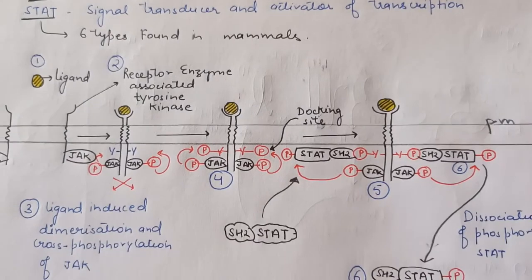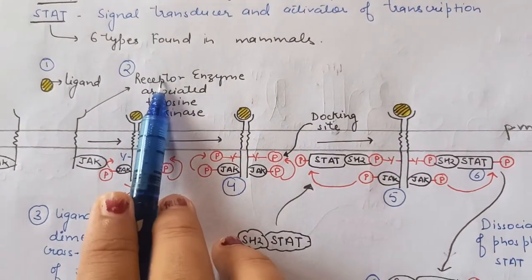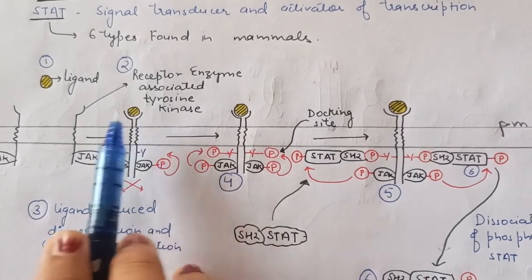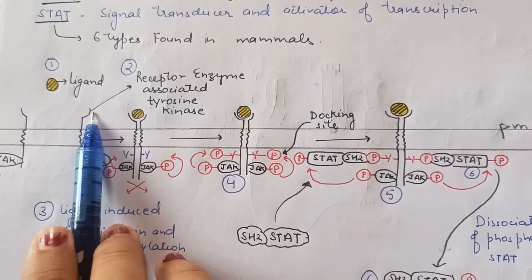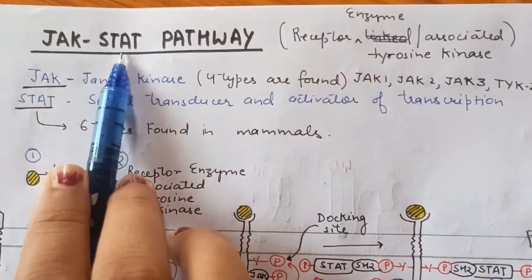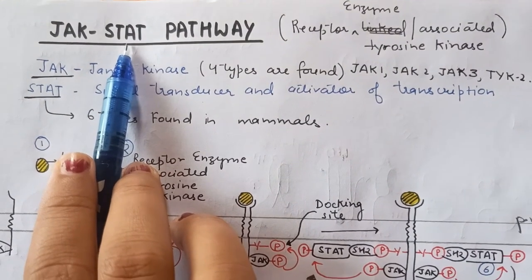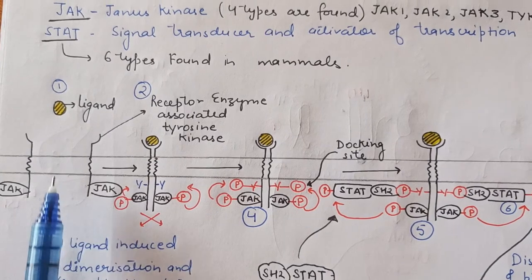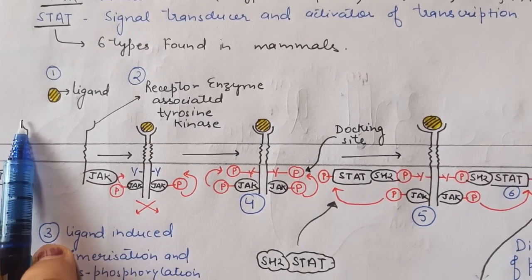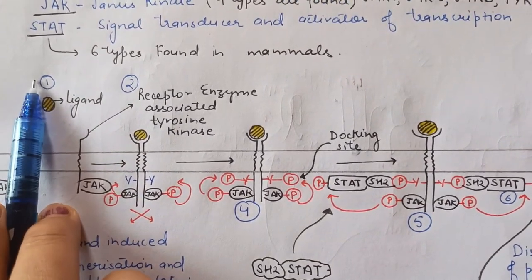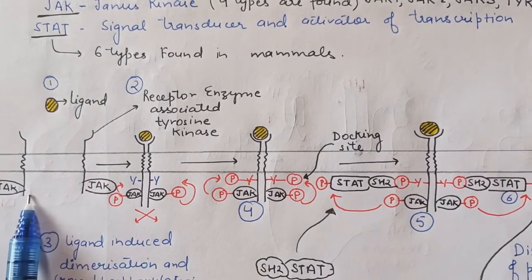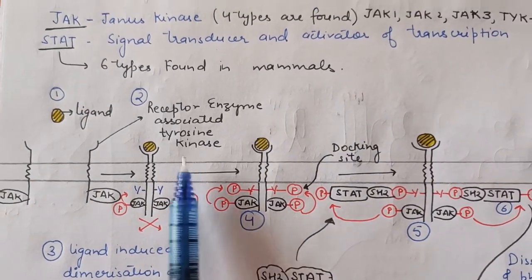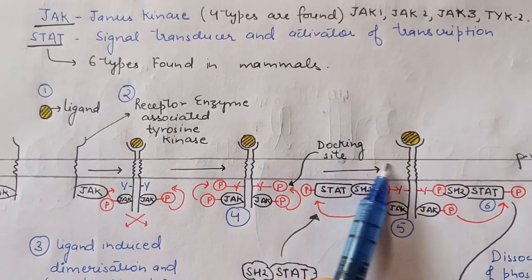The enzyme-associated receptor with tyrosine kinase activity is actually a cytokine receptor. In the JAK-STAT pathway, we mainly study cytokine receptors. These cytokine receptors have the N-terminal at the extracellular region, while the C-terminal is in the cytoplasmic region — this represents the plasma membrane.